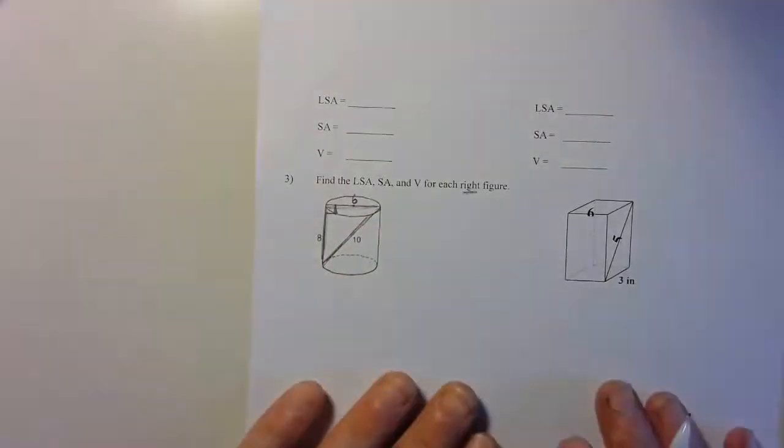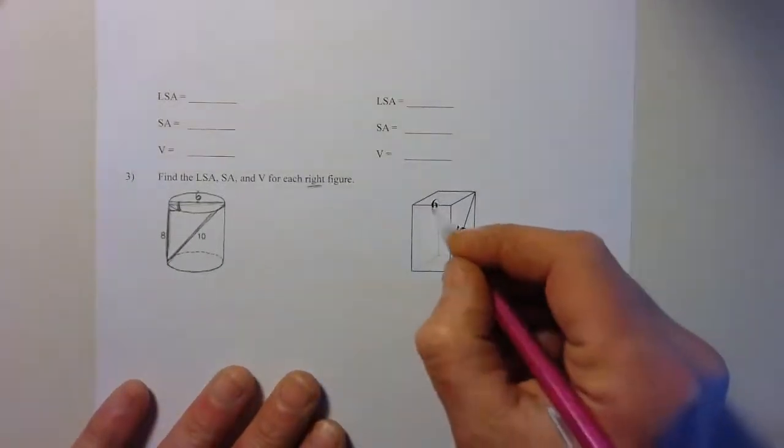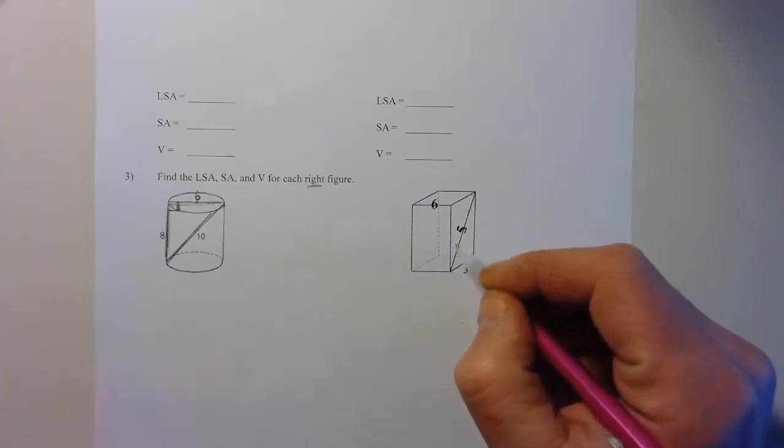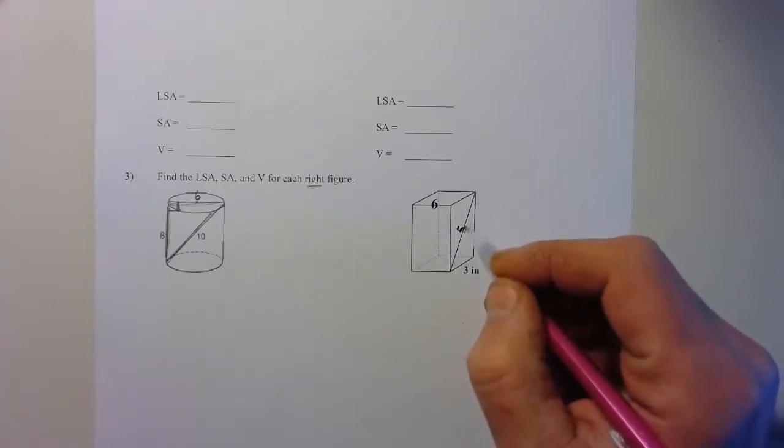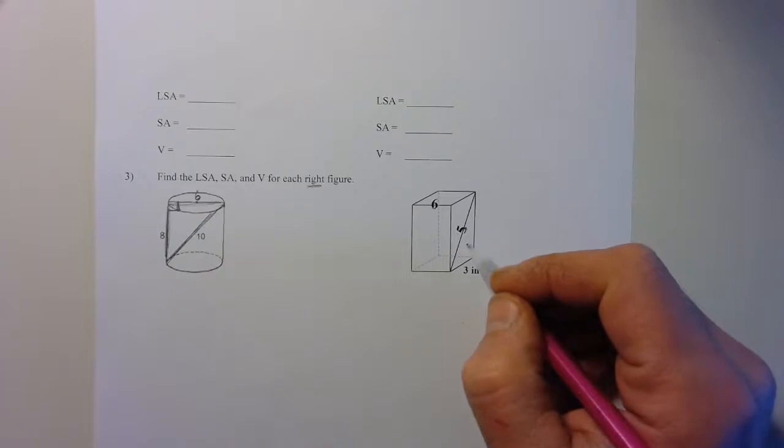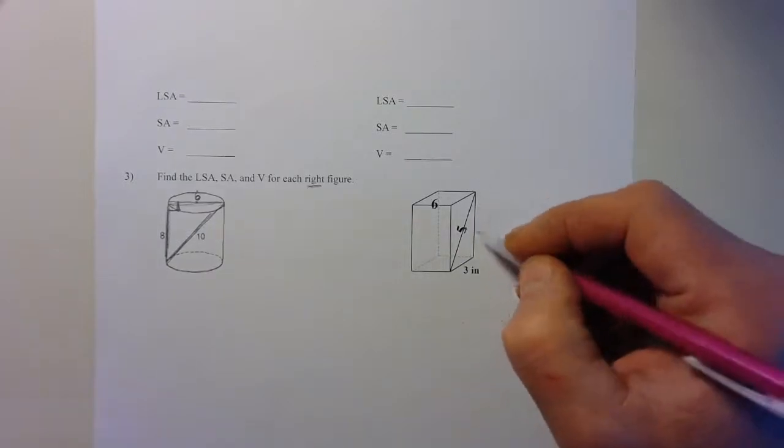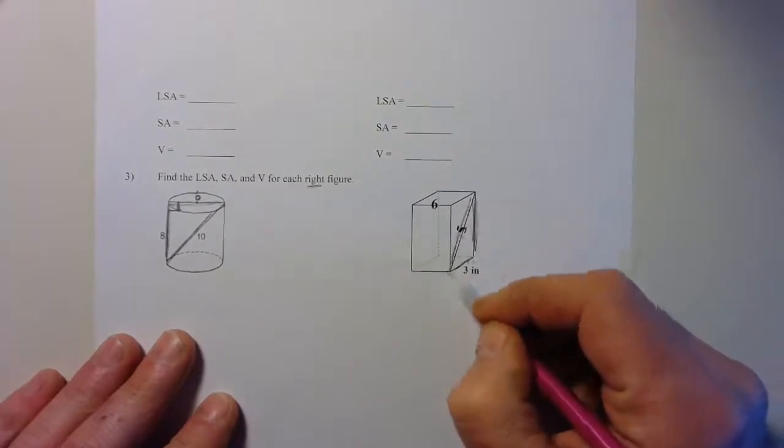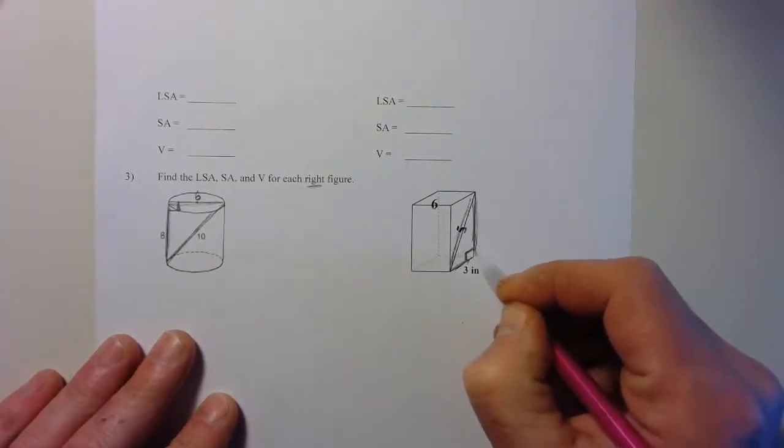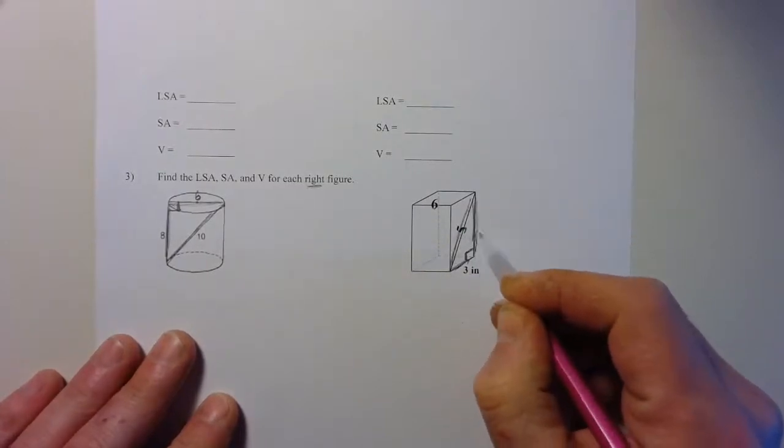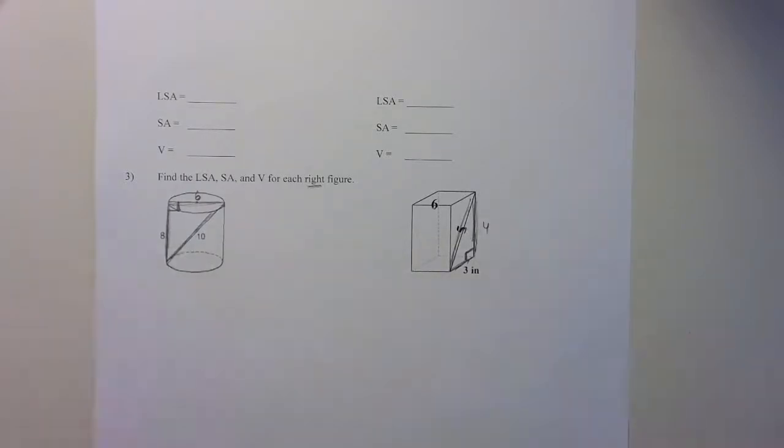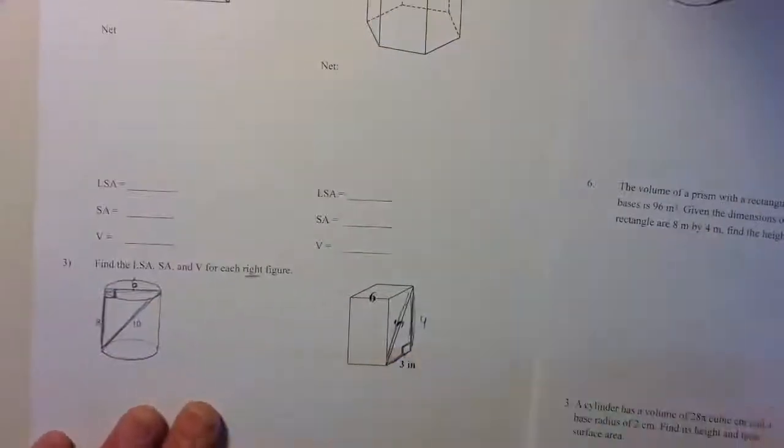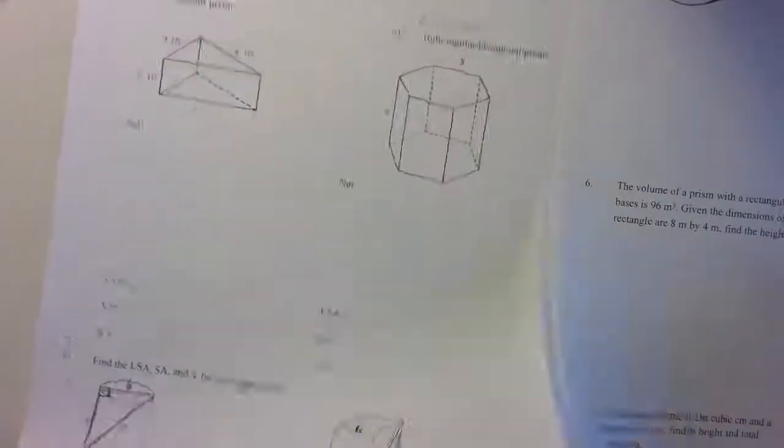Similarly for this one, you look at it and say I don't have the height. I have this slanted edge, this diagonal here, but I don't have the actual height. Well, if you were to draw that - remember again this is a right prism so there's a right angle here - if I look at that 3-4-5, now I can finish that one.